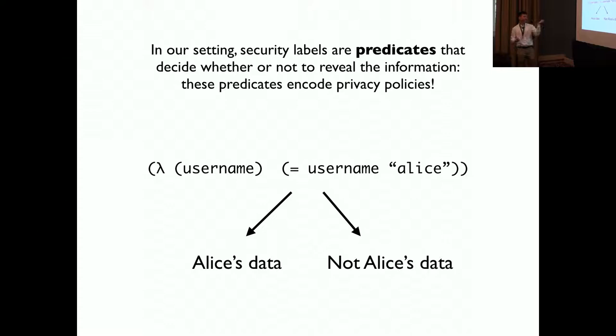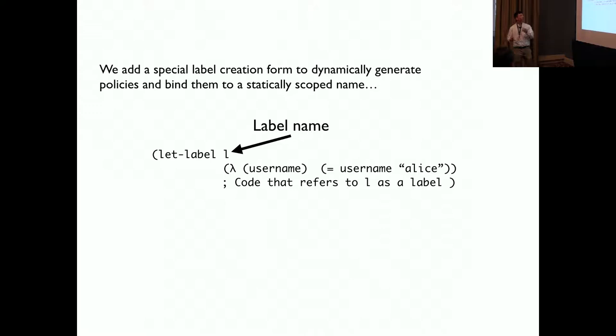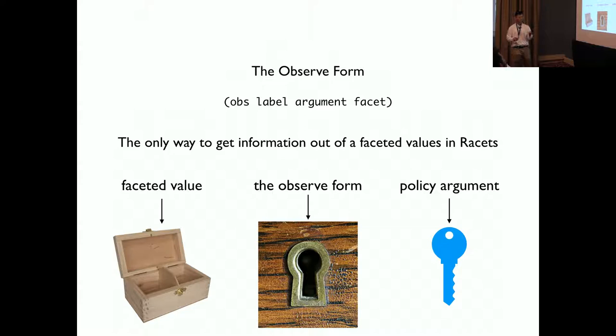To give an example, like this very simple policy or predicate, and in real life we don't do it like this. We use a lambda function that takes username as an input and check it against Alice. We also add a special label creation form to dynamically generate the policy and bind them to a static code scope name using the label form. Inside the label form, we have the label name, the policy, the predicate, the label's predicate, and the code that refers to the label.